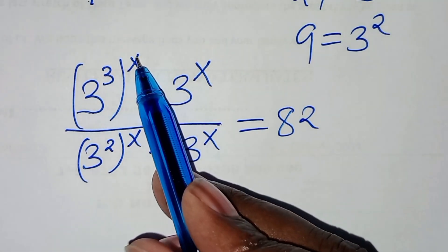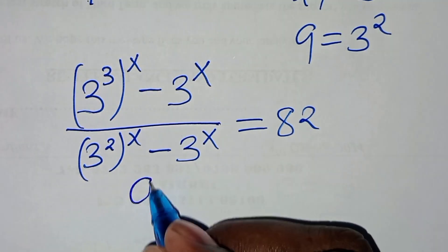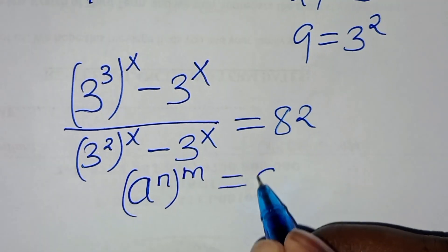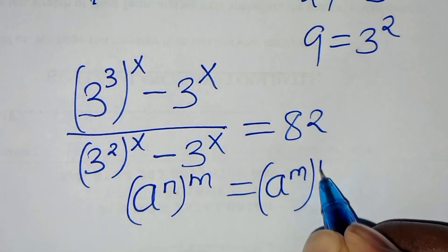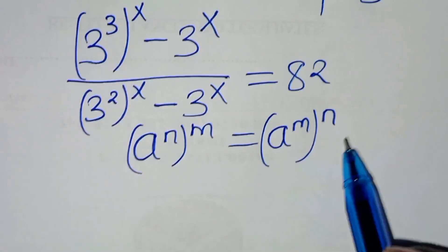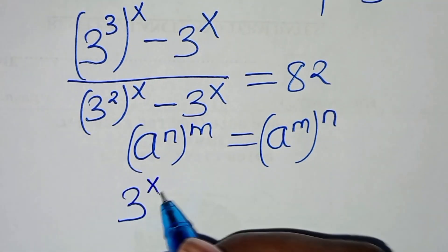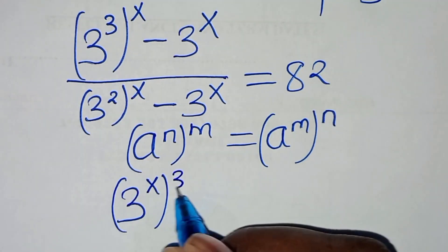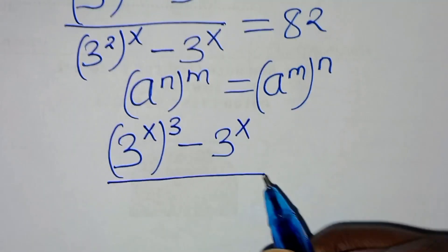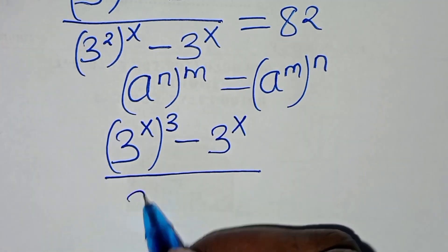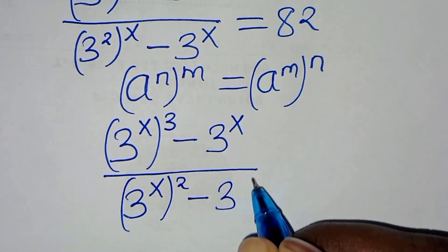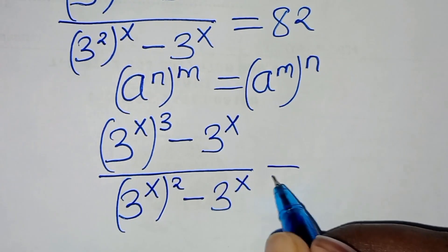Now, 3 raised to the power of 3 raised to the power of x is in the form of a to the power of m raised to the power of n, which we can express as a to the power of m times n. Applying this identity, we get 3 to the power of x, raised to the power of 3, minus 3 to the power of x, divided by 3 to the power of x raised to the power of 2, minus 3 to the power of x, equal to 82.